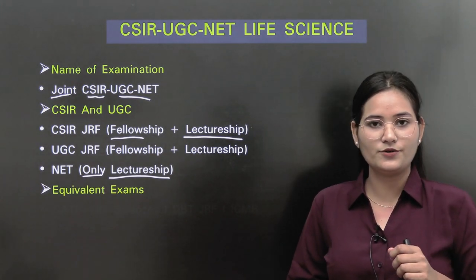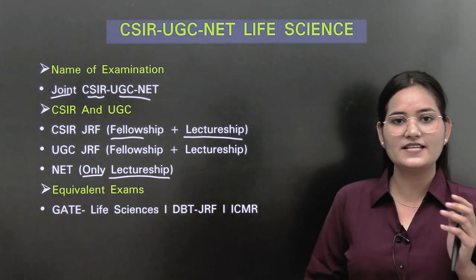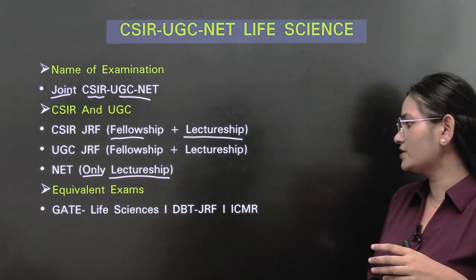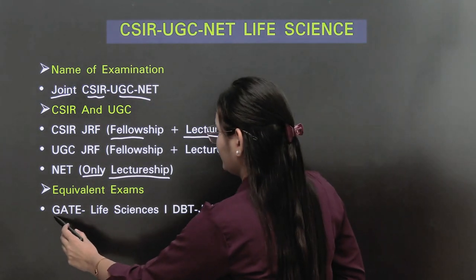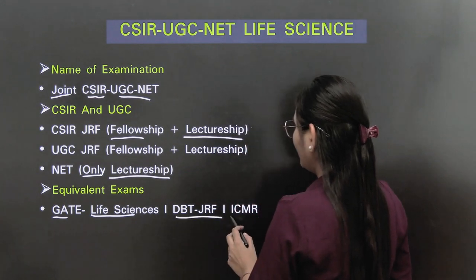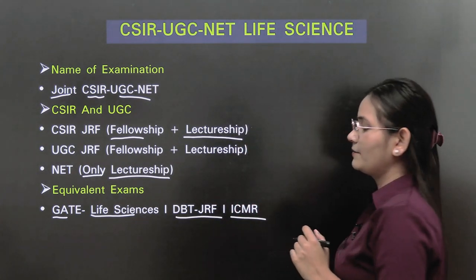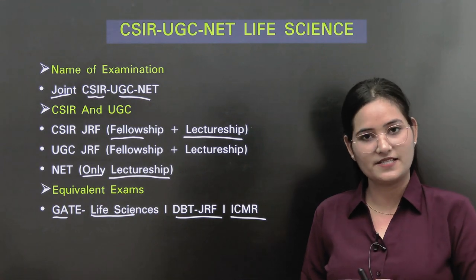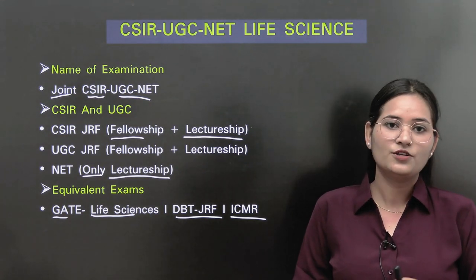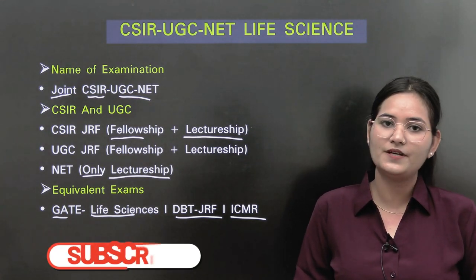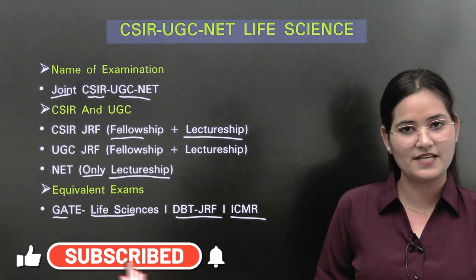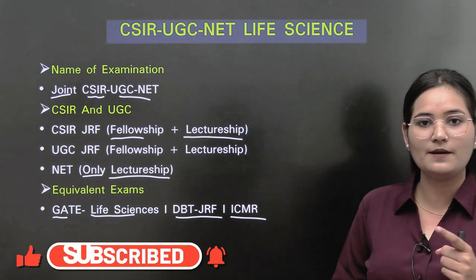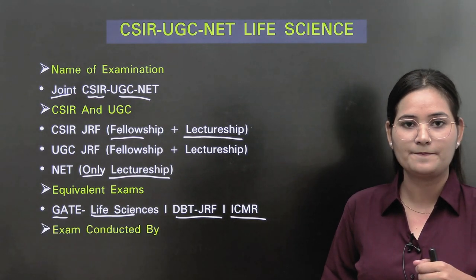If you are preparing for CSIR, you can also appear for equivalent exams: GATE Life Science, DBT JRF, and ICMR exam, because the syllabus of these three exams is 80% similar to CSIR. So if you are preparing for CSIR UGC Life Science, you can parallelly appear for GATE Life Science, DBT, and ICMR.